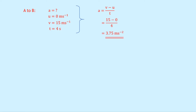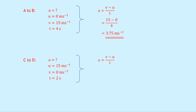Doing the same for C to D: u equals 15 metres per second because we start at that speed, and the final speed is 0 because the object comes to a stop, over a time of 2 seconds. Writing down our equation a equals v minus u over t, substituting in the numbers, we get 0 minus 15 divided by 2, which gives us minus 7.5 metres per second squared.